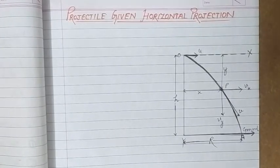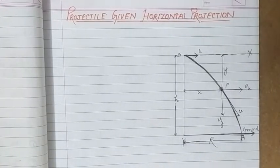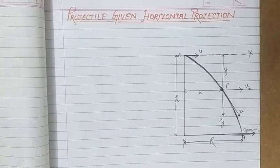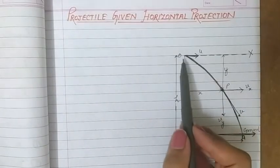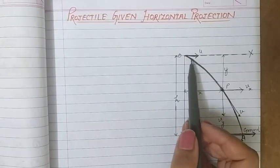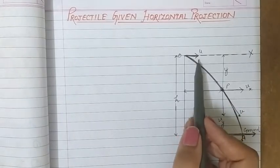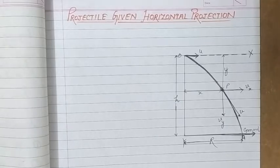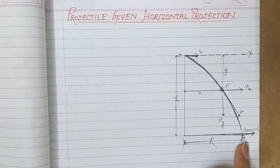Hello students. In this video we are going to study about the first kind of projectile — a projectile which is given horizontal projection. We consider a projectile which is fired horizontally. The projectile is fired horizontally with a velocity u (that is its initial velocity), and we have to show that the trajectory followed by this projectile is parabolic.